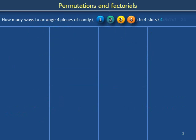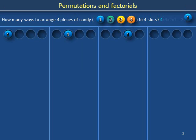How many ways can we arrange four distinct pieces of candy in a row? How many places can we place the first piece of candy, here colored blue? We can place piece number one in the first slot all the way to the left, in the second slot, in the third slot, or in the fourth slot all the way to the right. There are four places where we can place the first piece of candy.